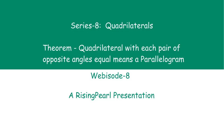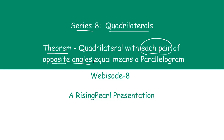Hello, Dostho. Welcome to this presentation from Rising Pearl. I am your host, Roy. Friends, we are discussing Series A. The topic is quadrilaterals. Today, Dostho, is episode number 8. The theorem that we are going to look at is: a quadrilateral with each pair of opposite angles equal is a parallelogram. We are going to learn about this theorem and how we can prove it. So, let's get started.